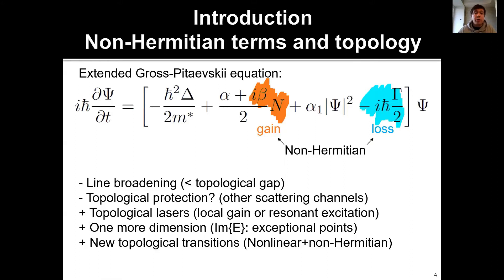On the other hand, the presence of these terms can lead to completely new topological effects, such as topological lasers or non-equilibrium polariton condensates in the presence of localized gain or resonant excitation. It actually adds one more dimension to the game, which is the imaginary part of energy. The energy is now complex and two-dimensional, and it leads to the physics of exceptional points. The interplay of non-linear and non-Hermitian terms opens possibilities for completely new topological transitions — a feature unique to exciton polaritons due to their interactive nature.